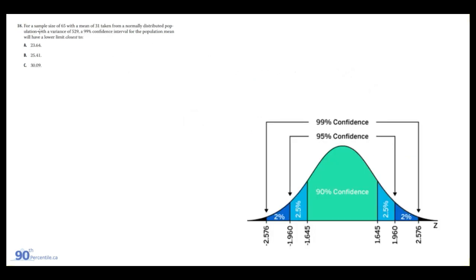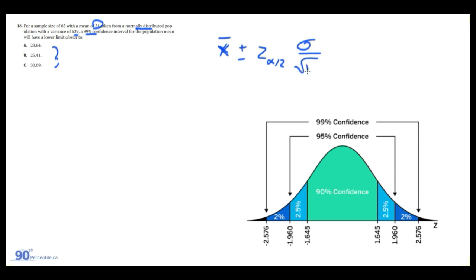Now we're asked to actually calculate a confidence interval. For a sample size of 65 and a mean of 31, taken from a normally distributed population with a variance of 529, what is the lower limit of a 99% confidence interval? The formula — which you must memorize — is: x̄ ± z(α/2) × (σ / √n), where x̄ is the sample mean, z(α/2) is the critical z-value at significance level divided by 2, and σ/√n is the standard deviation over the square root of sample size. This formula is almost guaranteed to be on the exam.